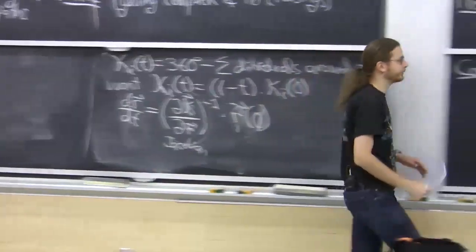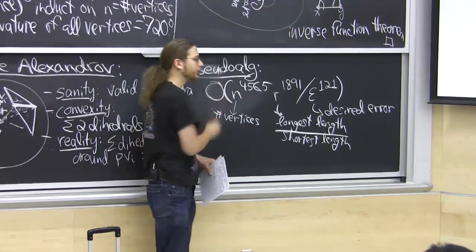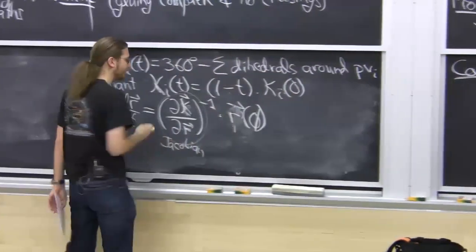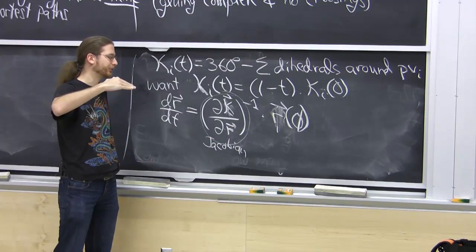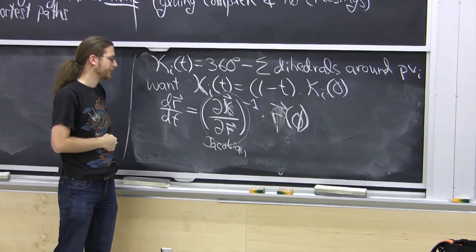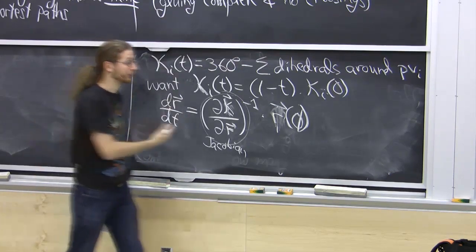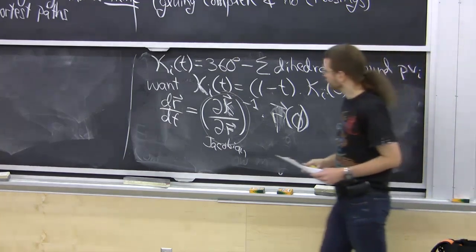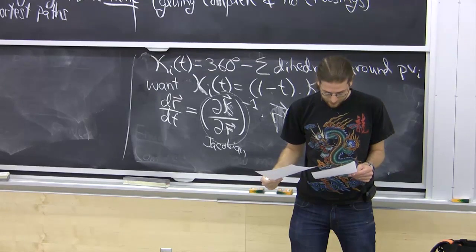This gives an algorithm in principle. To turn it into an actual algorithm — as done in a paper that appeared last year — you need to make the proof more constructive. You don't just want to prove the Jacobian is never zero; you need to prove it's always at least some epsilon, bounded away from zero. Instead of using the inverse function theorem, we look at second derivatives and bound those. We get a really awful bound — n to the 456.5 times r to the 1891 over epsilon — but we get an explicit bound on how long the algorithm takes.